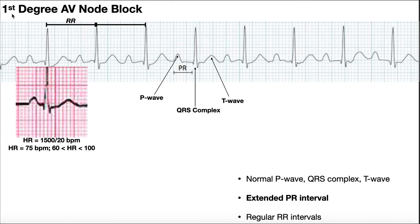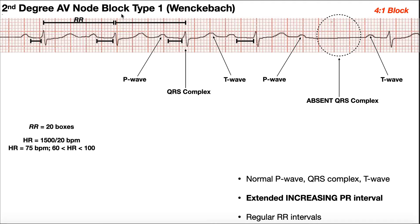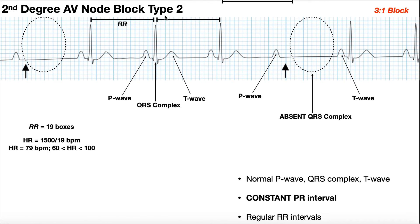To summarize: first degree AV node block — no QRS complexes are dropped, but we have an extended PR interval. Second degree type 1 — dropped QRS complex, and the PR interval is increasing in size; compare the distance between the end of the P wave and the QRS, and if the first is shorter than the last, it's type 1. Second degree type 2 — dropped QRS complex, but the PR interval doesn't change and can actually look normal.